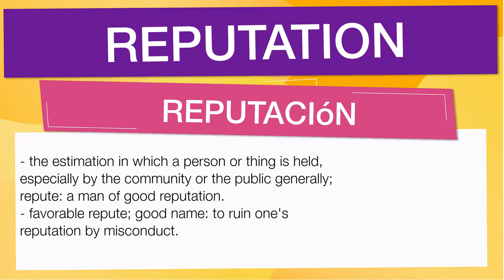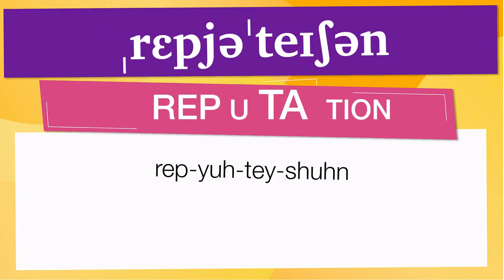Pay attention to the pronunciation. The first one is the word represented using the International Phonetic Alphabet. To pronounce reputation, have in mind that the size of the syllable indicates where the accent or stress is. In this case, the accent is in the third syllable, corresponding to 'tay.' Below are other ways to pronounce it.